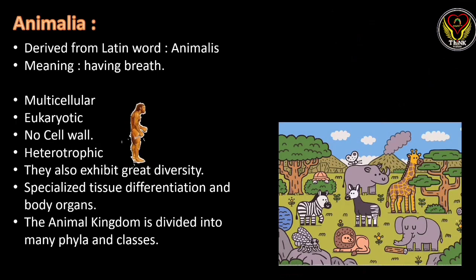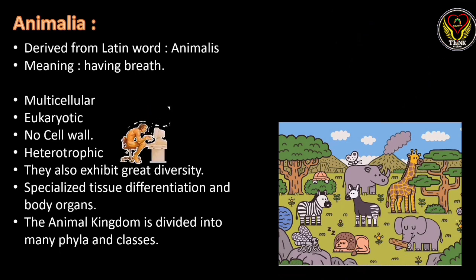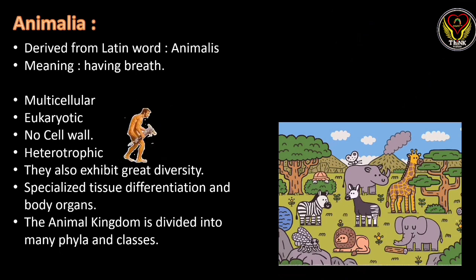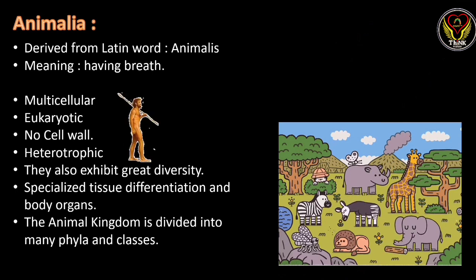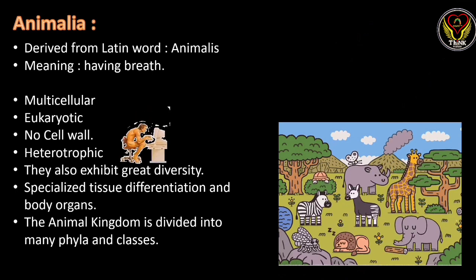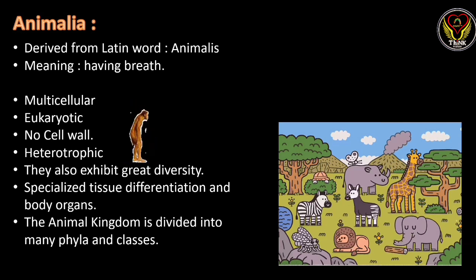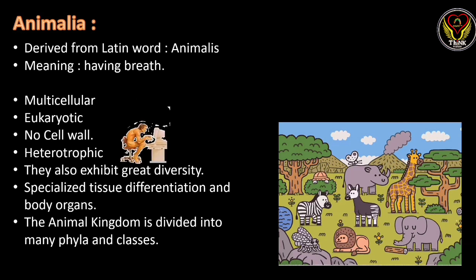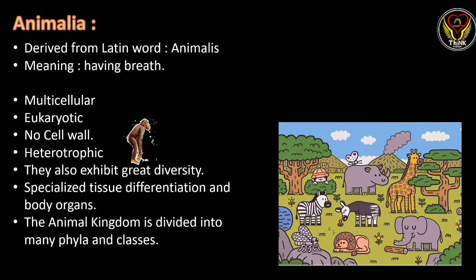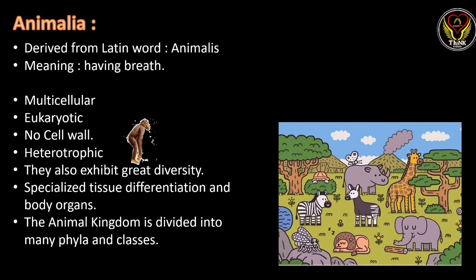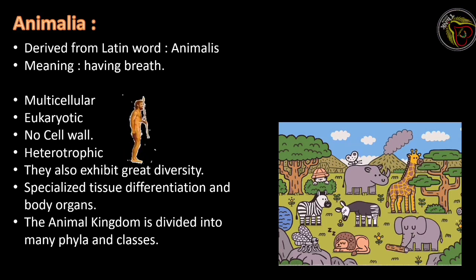The most advanced group is kingdom Animalia, derived from the word 'animalis' meaning having breath. The cell type is multicellular and eukaryotic with no cell wall. As the kingdom developed, the animalia kingdom has no cell wall. It is heterotrophic, meaning it is purely dependent on other organisms for food. They also exhibit greater diversity, specialized tissue differentiation and body organs. The animal kingdom is divided into many phyla and classes.